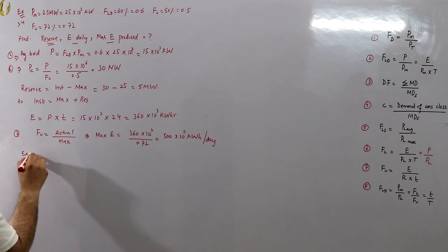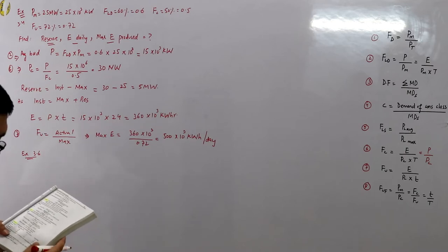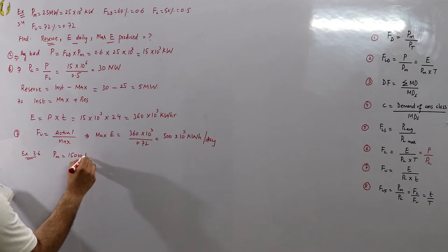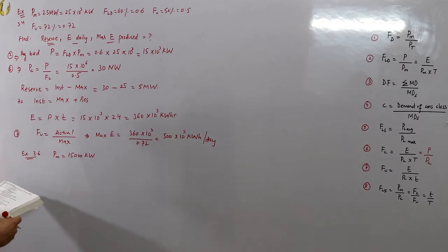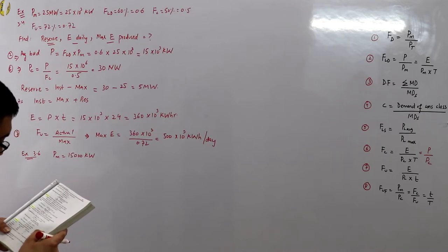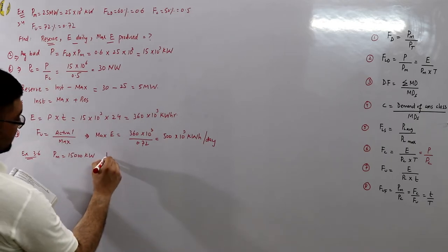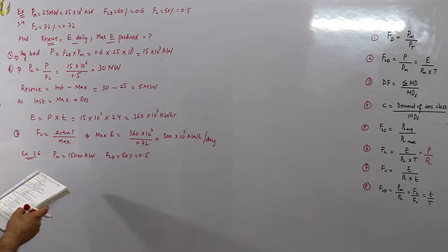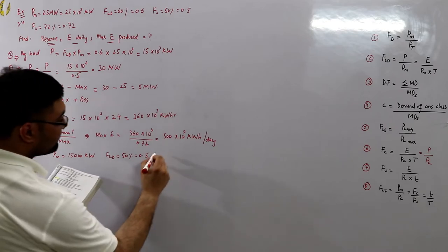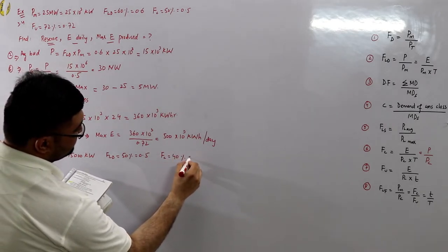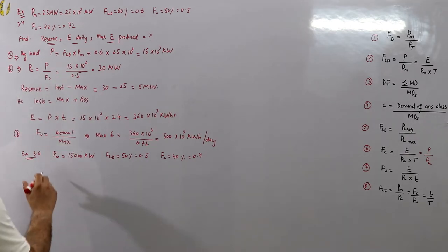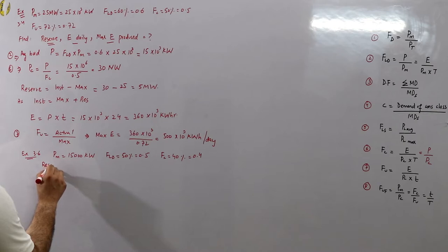Example 3.6: a power station has a maximum demand of 15,000 kilowatts, an annual load factor of 50% (0.5), and a plant capacity factor of 40% (0.4). Determine the reserve capacity of the plant.